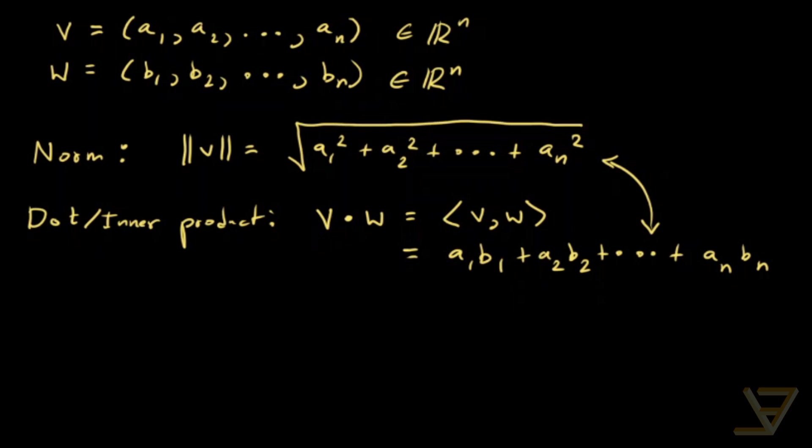Before we get into the triangle inequality and how to derive it, we need three properties. First, commutativity of the inner product: ⟨v, w⟩ = ⟨w, v⟩.